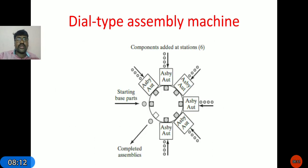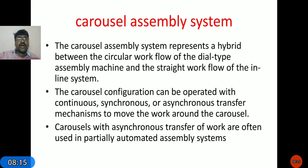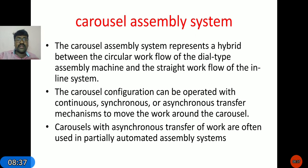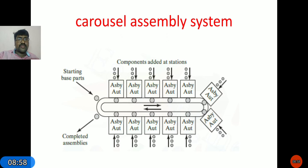Coming to the carousel assembly system: it is a combination of inline and circular type systems. This configuration can be operated with continuous, synchronous, and asynchronous transfer mechanisms. Carousels with asynchronous transfer are often used in partially automated assembly systems, because the work cycle time is not fixed at every workstation. It combines both linear and circular configurations.